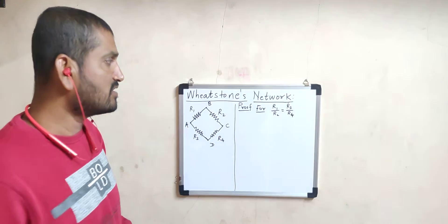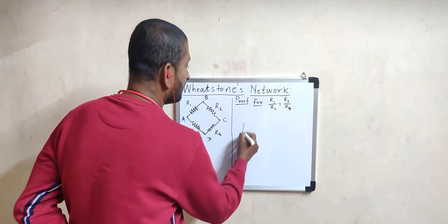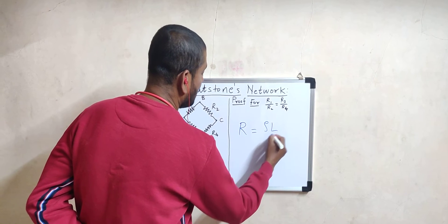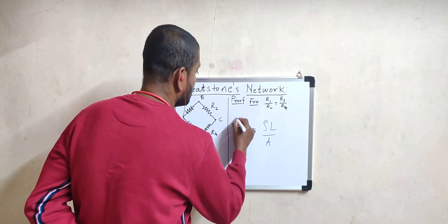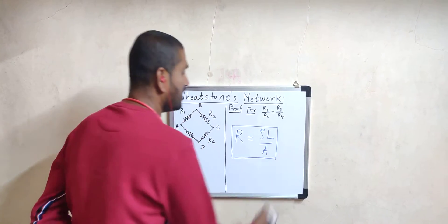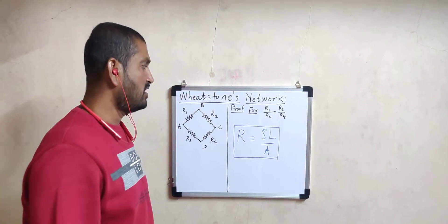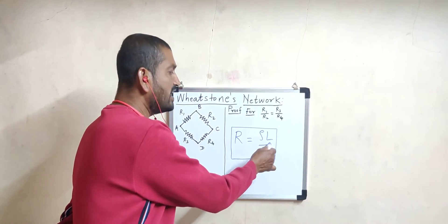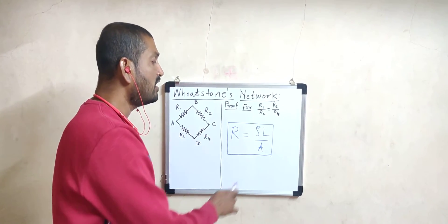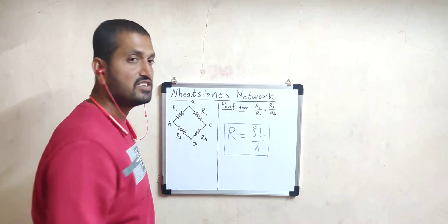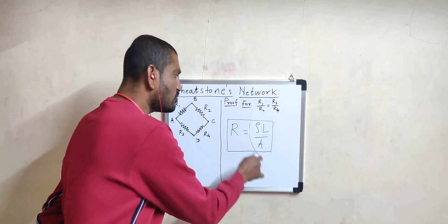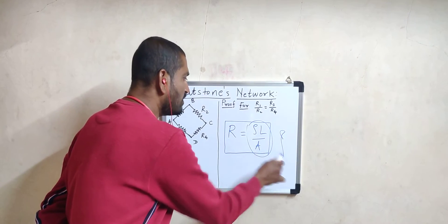Already in 11th standard we discussed that the resistance of a metallic wire is given by the formula R = ρL/A. This is the formula by which we can calculate the resistance of a given metallic wire, for which we need to know the length of the wire, the area of cross section, and the specific resistance of the material. But now, without knowing these quantities, is it possible to get resistance?